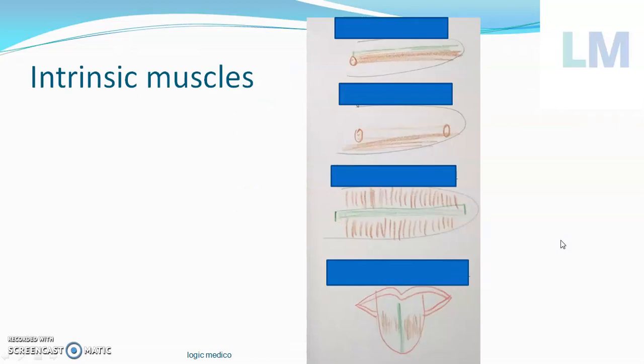In this tongue, there are two types of muscles or two groups of muscles. Extrinsic muscles begin from one or the other bone of the skull and ultimately reach the tongue — they alter the position of the tongue within the oral cavity. Whereas intrinsic muscles are those muscles which are within the tongue itself — they alter the shape of the tongue.